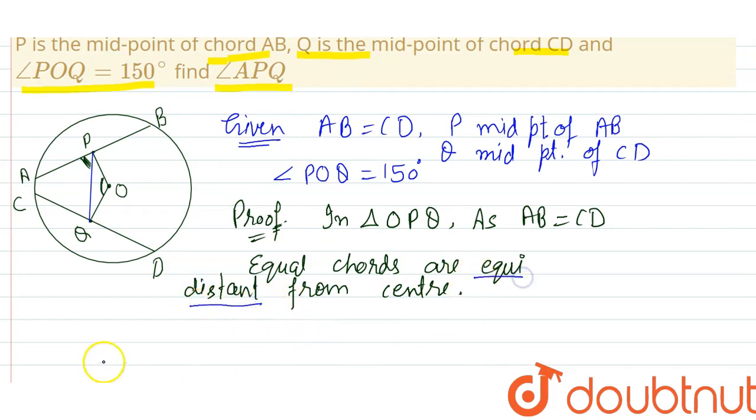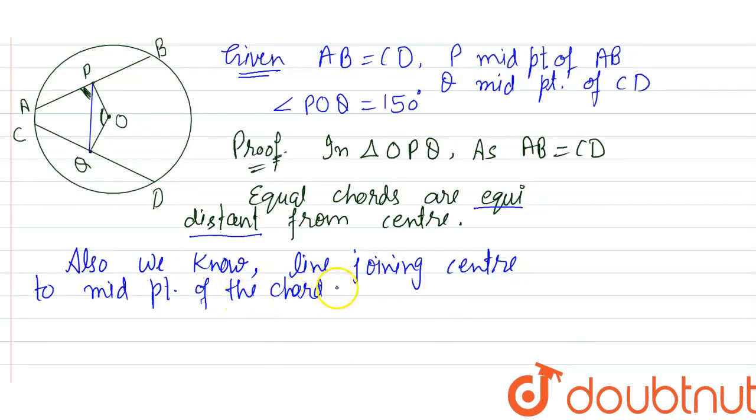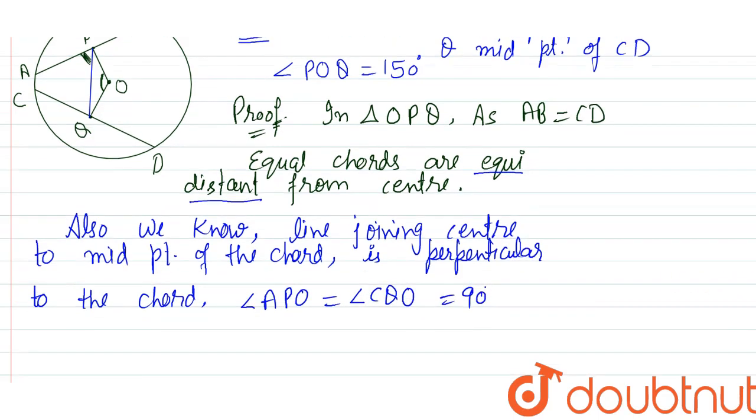They are equidistant from the center. Also, we know the theorem. Also, we know line joining center to midpoint of the chord. If we join center to midpoint of the chord, then that line will be perpendicular to the chord. So, therefore, we can say angle APO also angle CQO. These two angles will be 90 degrees as P and Q are the midpoints. So, if midpoints are joined to center, then the angle will also.